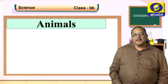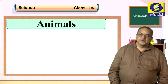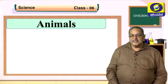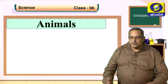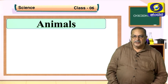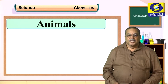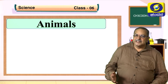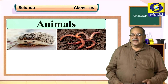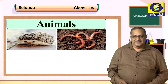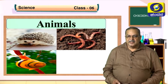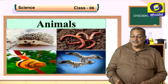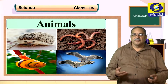Animals have to move from one place to another in search of food, shelter, and also for a mate. Unlike plants, which can prepare their own food and do not move, animals must move. Do all animals move in the same way? Look at these animals: the snail, the earthworm, birds — they all have different modes of movement.